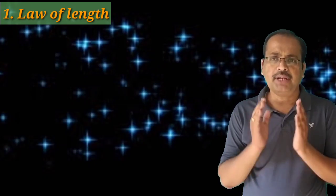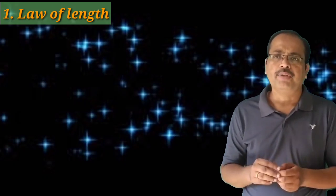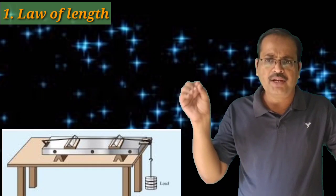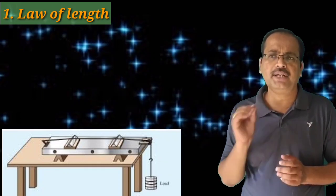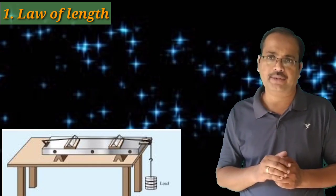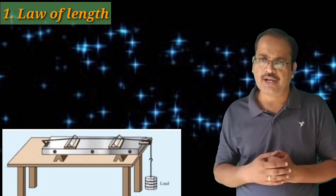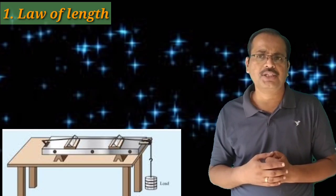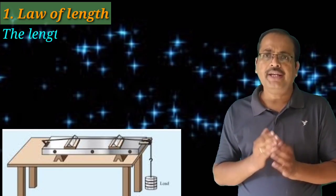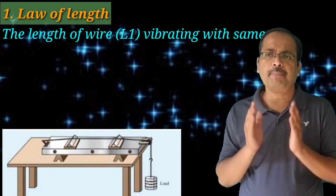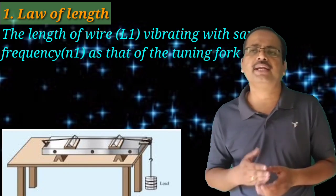Then, some tension T is fixed on the wire. The wire is stretched on the sonometer and some tension, capital T, is applied on the free end of the wire by slotted weights attached to the free end of the wire. The length of the wire L1 vibrating with the same frequency N1 as that of the tuning fork is determined as follows.